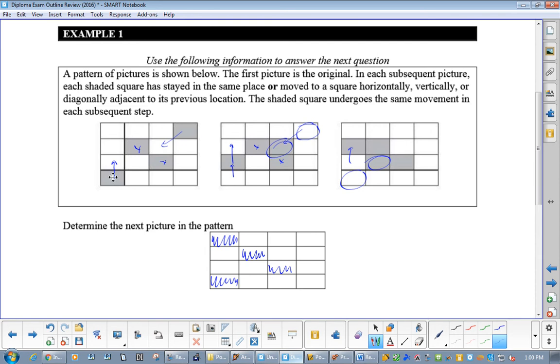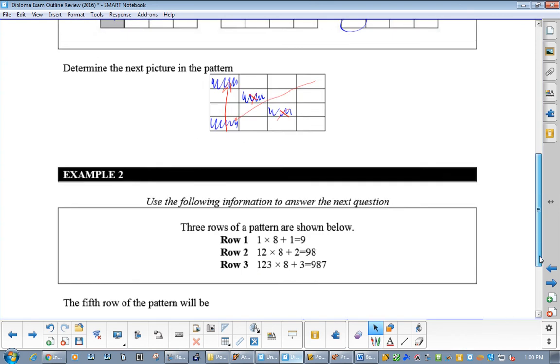Just have seen it once. So, you get the same one on the diploma. It seems familiar. They'll mess with what the squares are doing. But pay attention to the ones that are staying still. Pay attention to the ones that are moving.